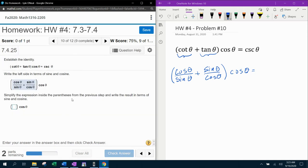Simplify the expression inside the parentheses from the previous step and write the result in terms of sine and cosine. All right. So the only way that I can simplify this expression inside is to add the two fractions together. Now think with me, if I want to add two fractions together, what do I have to have?